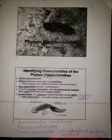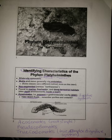Welcome to Phylum Platyhelminthes, the flatworms. Identifying characteristics of the Phylum Platyhelminthes: they are bilaterally symmetric. They are motile and move generally via undulation. Some classes use a different method, more on this later. They are non-segmented, versus earthworms.